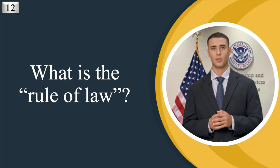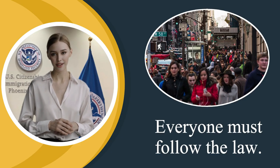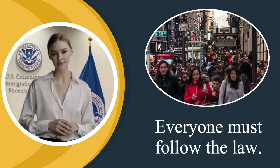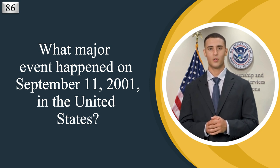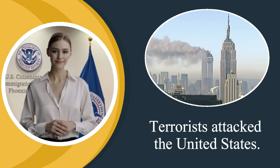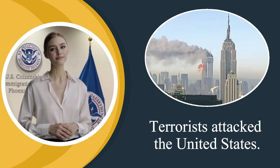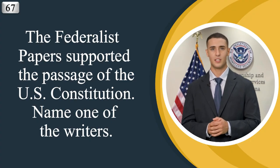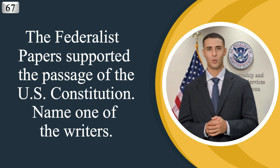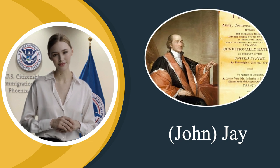What is the rule of law? Everyone must follow the law. What major event happened on September 11, 2001 in the United States? Terrorists attacked the United States. The Federalist Papers supported the passage of the U.S. Constitution — name one of the writers. John Jay.